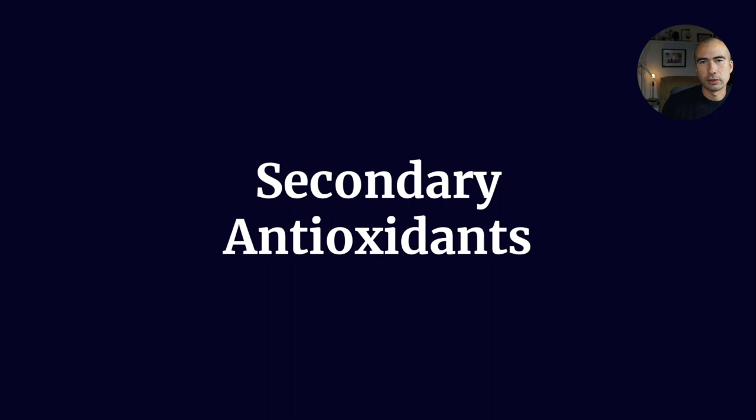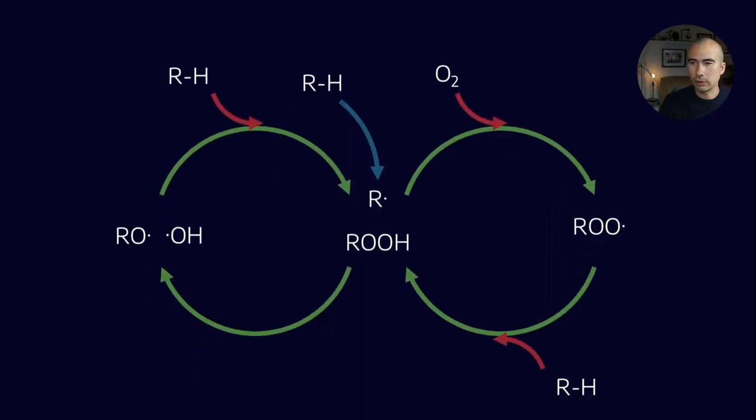So let's talk about the secondary antioxidants. If you remember, we have something called the auto-oxidation cycle, which describes how different base oils and hydrocarbons oxidize while they're in service. We can try and inhibit oxidation by attacking different parts of a problem.